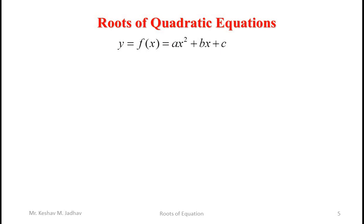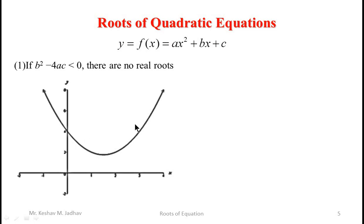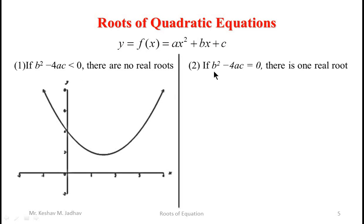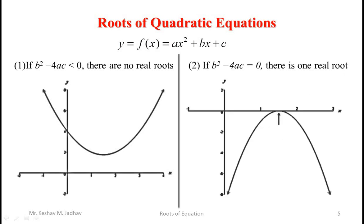Let us see different cases of the quadratic equation. If b squared minus 4ac is less than 0, there are no real roots for the given equation because the curve does not intersect the x-axis. If b squared minus 4ac is equal to 0, there is only one real root, and the curve touches the x-axis at a single point.